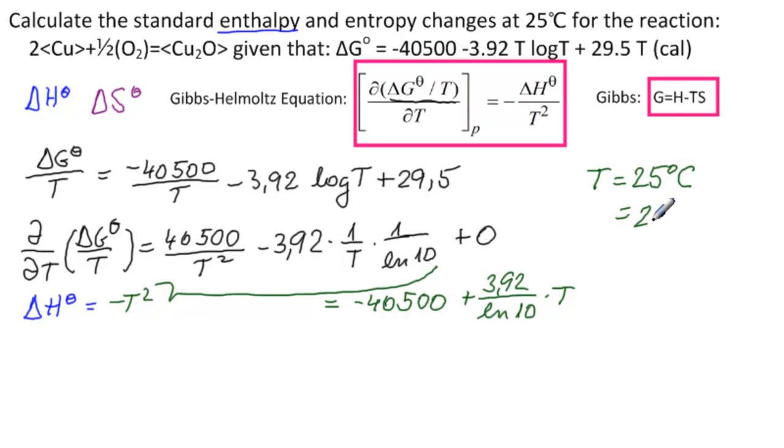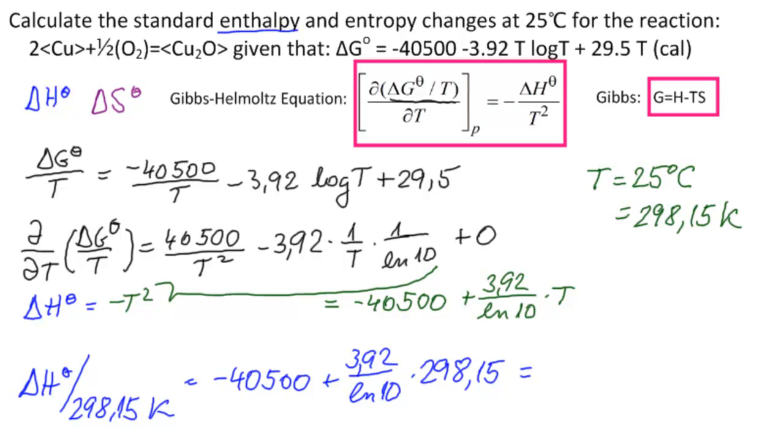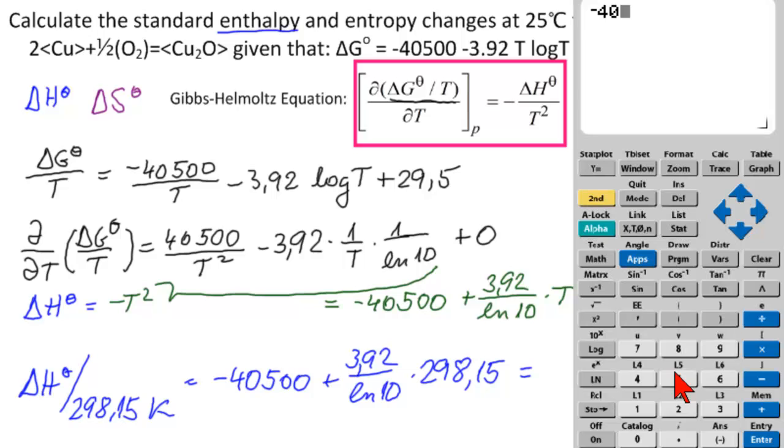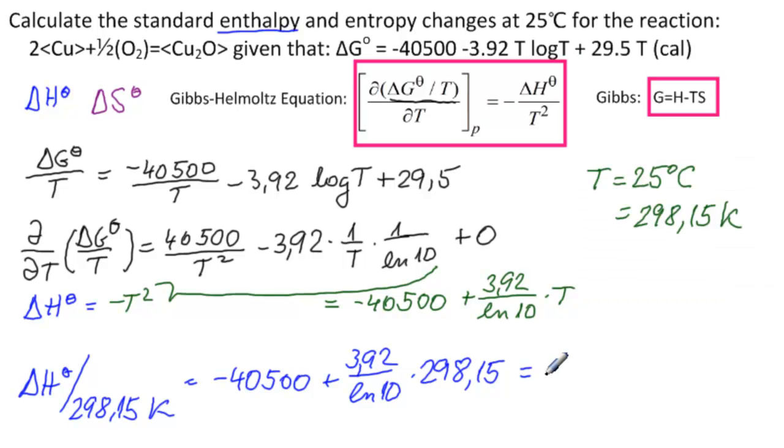but this T is in absolute, so that would be 298.15 Kelvin. So delta H theta at 298.15 Kelvin is equal to minus 40,500 plus 3.92 over LN of 10 times 298.15, which equals minus 39,992 calories. And that is the answer to the first part of the question.